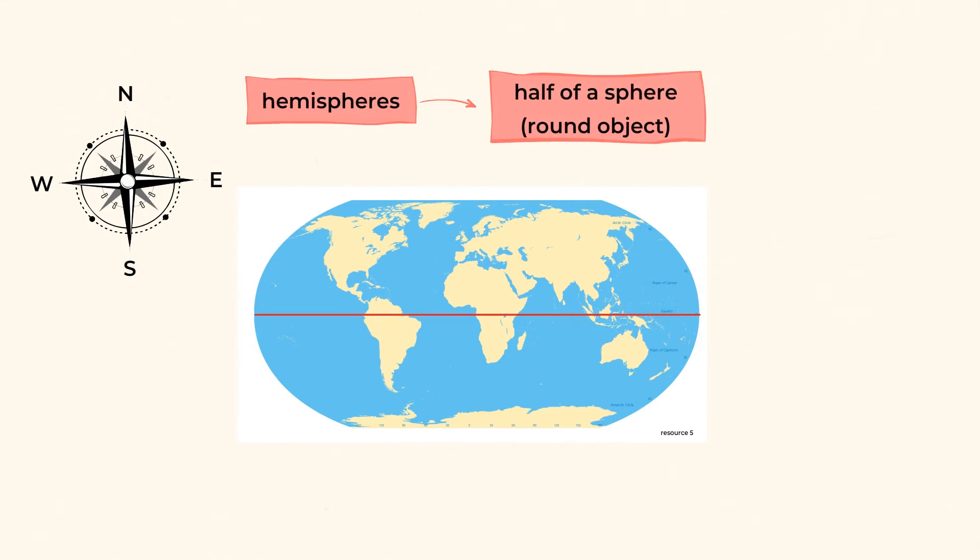A hemisphere is half of a sphere, or a round object. So imagine you take a tennis ball and you cut it into two equal parts. Well, you now have made two hemispheres out of that tennis ball.